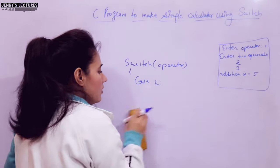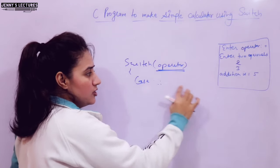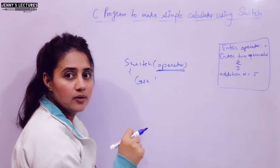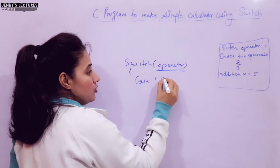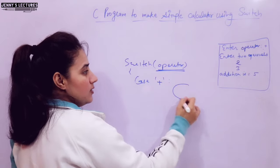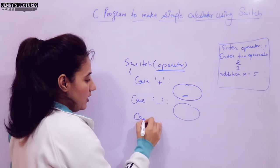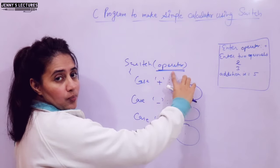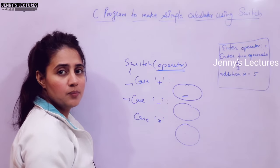Now here, whatever value we pass — whatever the result of the expression — that gets checked against the case values. If it matches, those statements are executed. So in the cases, we write the operators: if you enter plus, addition is performed; if minus, subtraction; if multiply, multiplication. We write the operators as single-quote character constants. Whatever operator you pass gets matched against these cases, and when a match is found, that block of statements is executed.